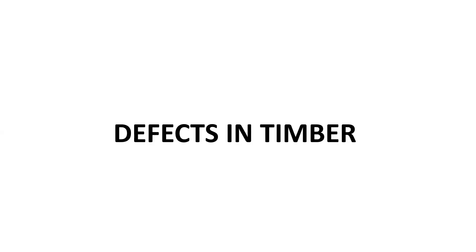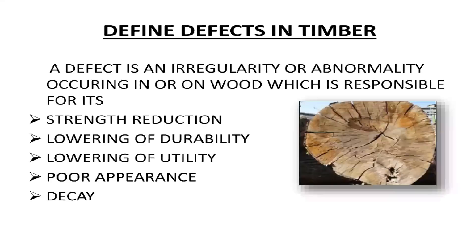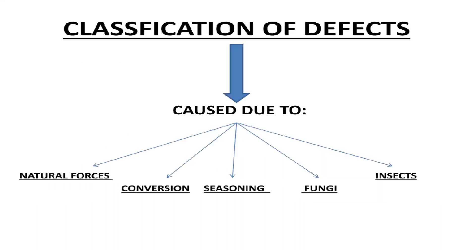Let us see what are those defects. A defect is an irregularity or abnormality occurring in or on wood, which is responsible for its strength reduction, lowering of durability, utility reduction, poor appearance, and decay. The classification of defects in timber is: caused due to natural forces, conversion, seasoning, insects, and fungus.